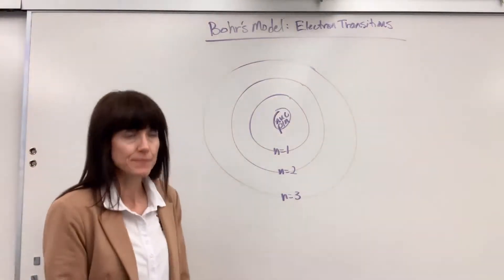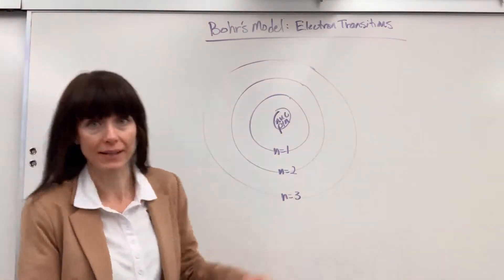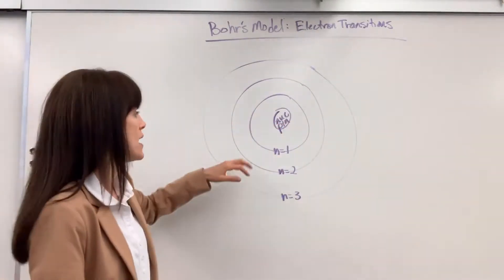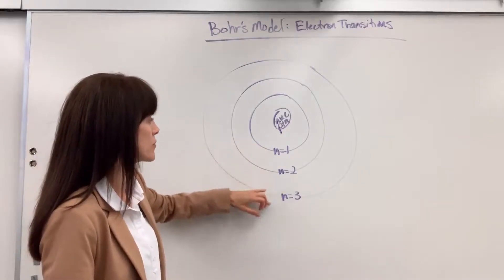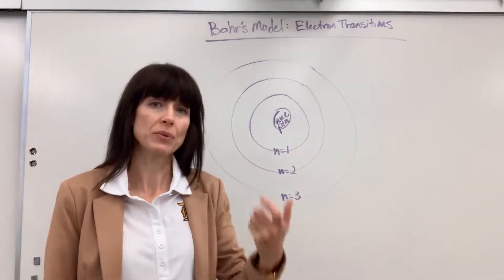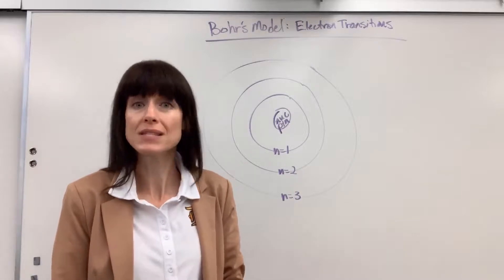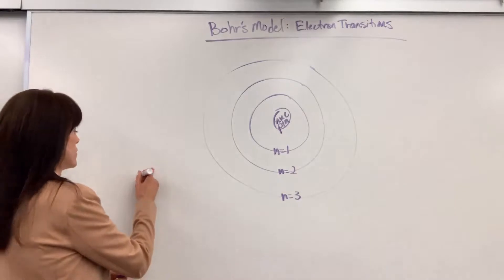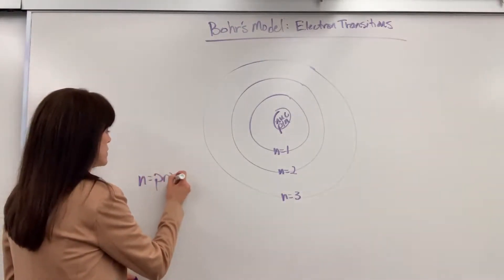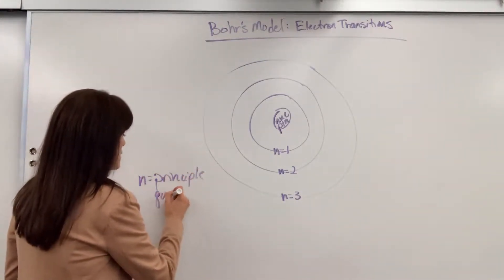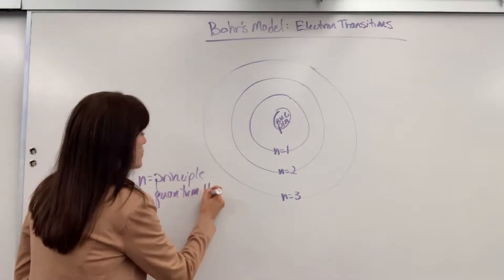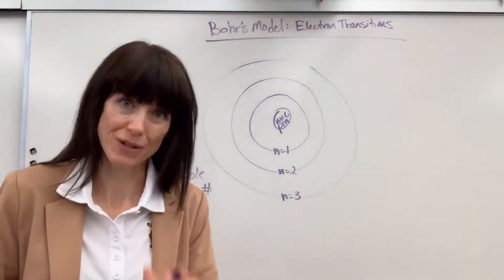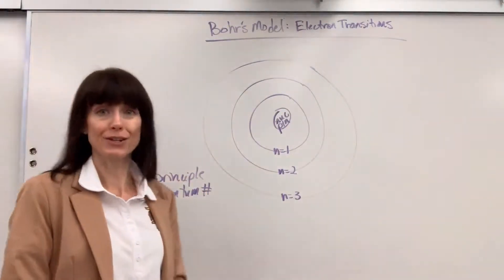Let me show you what we've got. I drew Bohr's planetary model. We have a nucleus in the center — protons and neutrons are in the nucleus — and then I have energy levels 1, 2, and 3. Notice that N. N is what we use to represent energy levels. It's called the principal quantum number. Let's write that down: N is the principal quantum number. When you get into physical chemistry in college, there are four quantum numbers. This is the first one — it's simply energy level N.